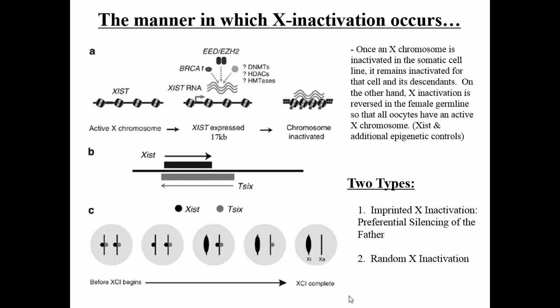The manner in which X inactivation occurs varies between species, but in humans there are two types: imprinted X inactivation, which is preferential silencing of the father's X, and random X inactivation. In humans, we basically have random X inactivation.